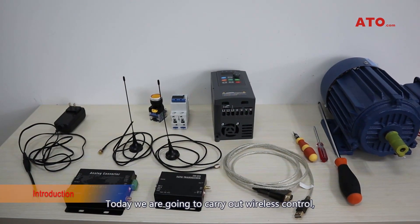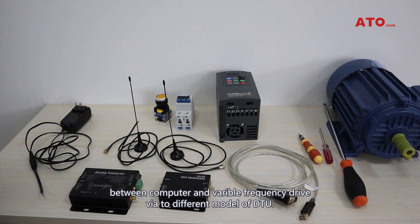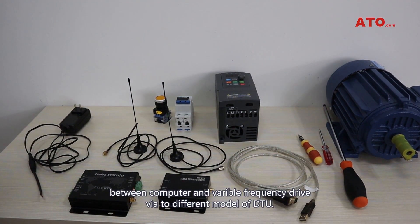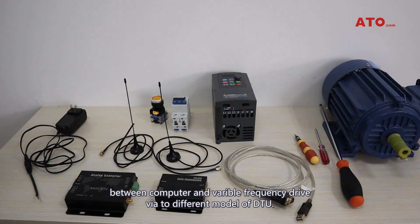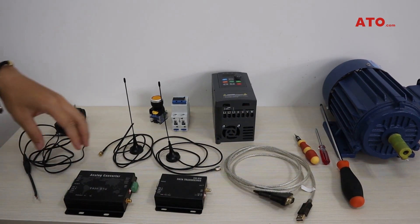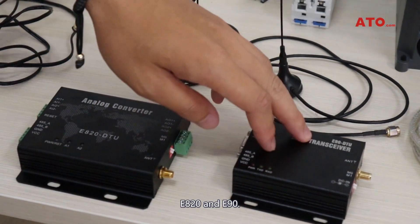Today we are going to carry out wireless control between computer and the variable frequency drive via two different modes of DTU. There are two different modes of DTU: E820 and E90.